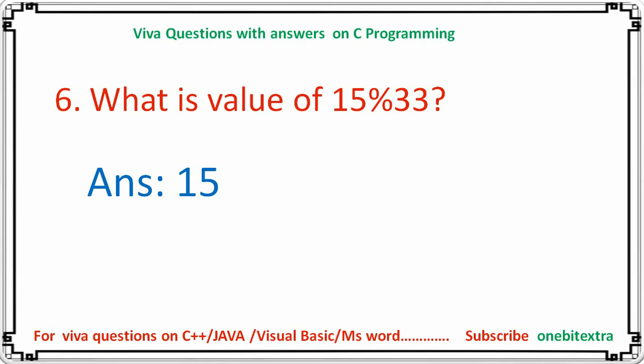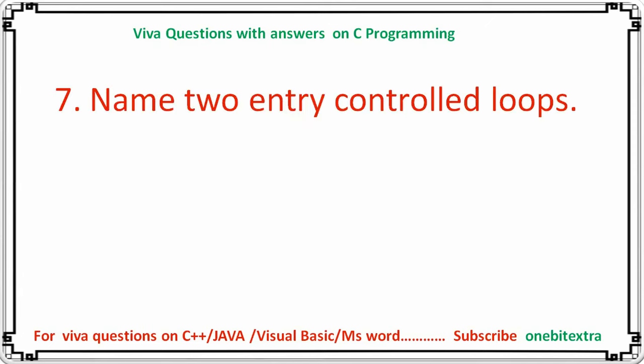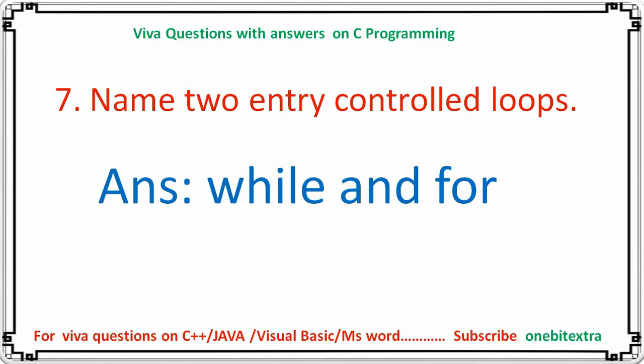Next question: name two entry-controlled loops. The answer is while and for. Entry-controlled loops are those where the condition is checked at the entry point — if the condition is true then the body executes, otherwise not.